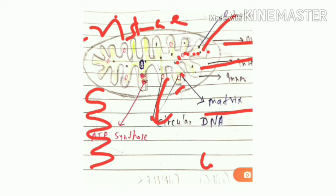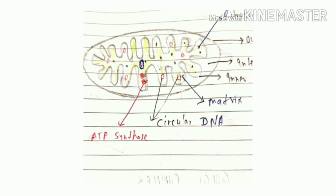As mentioned earlier, the inner membrane of mitochondria is folded, and ATP synthetase is present on the inner membrane, which enables ATP formation. ATP is also known as the energy currency of the cell. Because the inner membrane is folded, its surface area increases, allowing more ATP to be formed. Inside the mitochondria, a fluid called matrix is present.